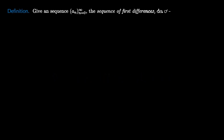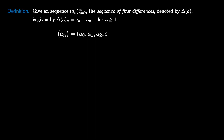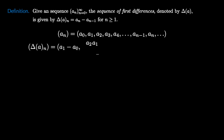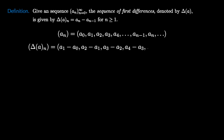Let's generalize what we did when we studied arithmetic sequences. Given any sequence a_n, we can define the sequence of first differences, denoted by capital delta of a, by the formula: delta(a)(n) = a_n minus a_{n-1} for n greater than or equal to 1. We visualize this as: the first term is a_1 minus a_0, the second term is a_2 minus a_1, and so on, so the nth term is a_n minus a_{n-1}. This is the sequence of first differences.